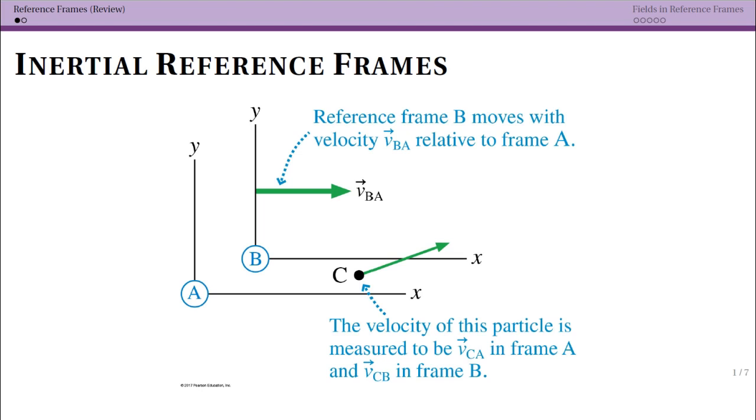Briefly, the idea is that we have two different coordinate systems, one which is moving with respect to the other. So we call this coordinate system A, we call this coordinate system B.